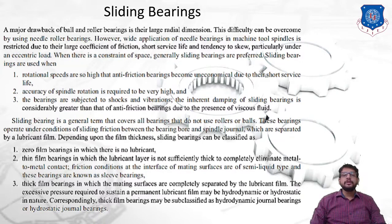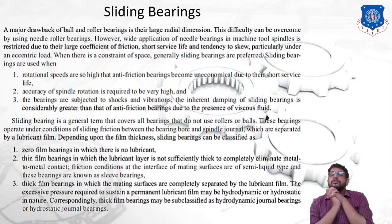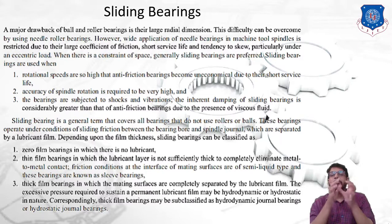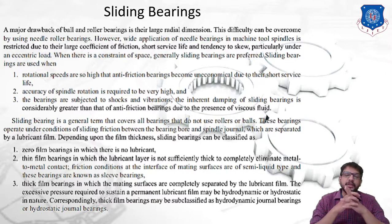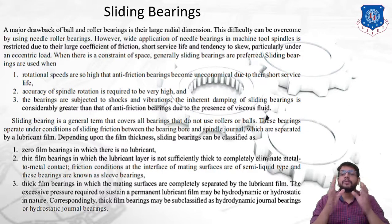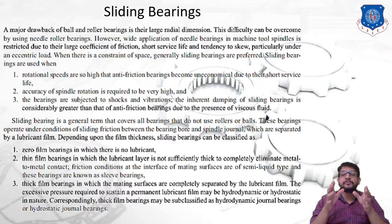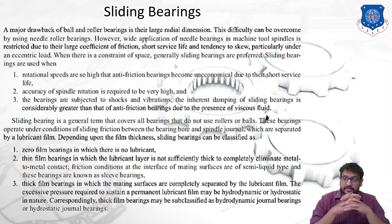Sliding bearing is a general term covering all bearings that do not use rollers or balls. These bearings operate under a condition of sliding friction between the bearing bore and the spindle journal, which are separated by a lubricant film. Depending upon the film thickness, sliding bearings can be classified as: zero film bearings (no lubricant), thin film bearings (lubricant layer not thick enough to completely eliminate metal-to-metal contact), and semi-liquid friction conditions at the interface of mating surfaces.